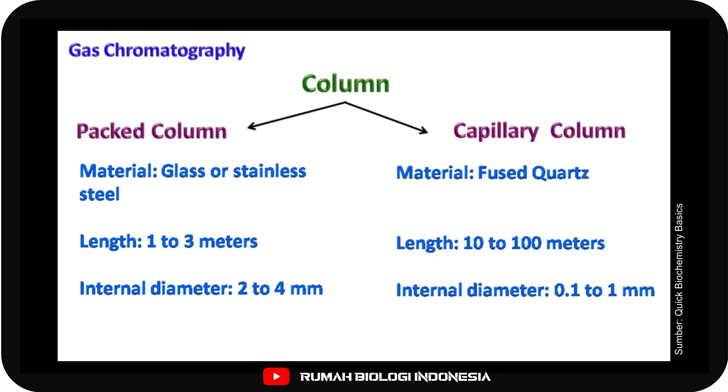The capillary column is made up of fused silica. These columns are very long and have length from 10 to 100 meters and have an internal diameter of 0.1 to 1 millimeter.